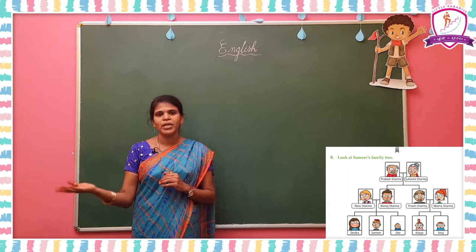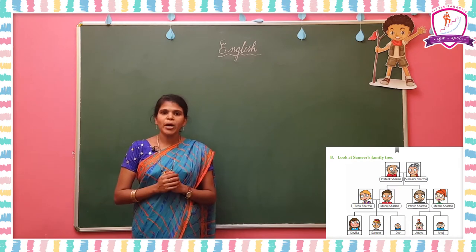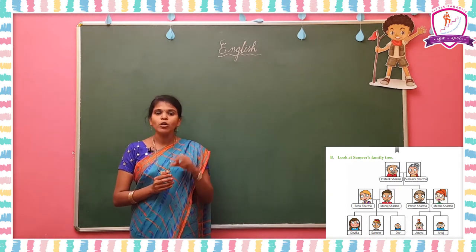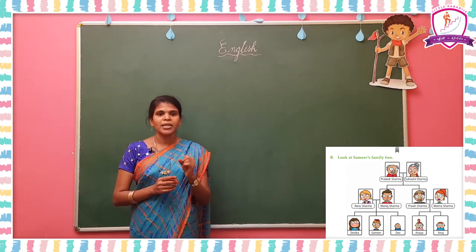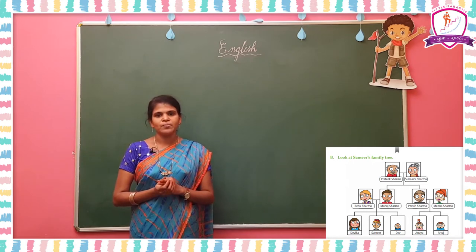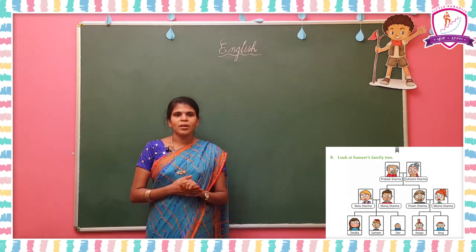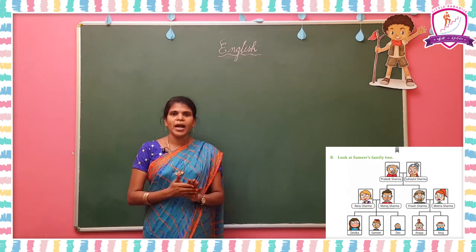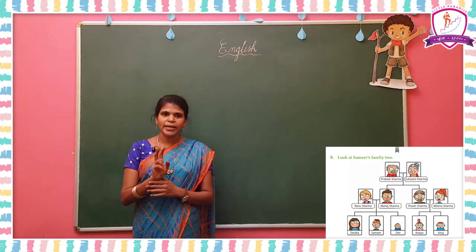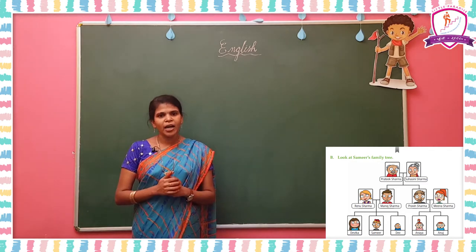Praveen Sharma's wife is Meena Sharma. Mano Sharma and Renu Sharma have three children: Samir and Dev. Praveen Sharma and Meena Sharma have two children: Anya and Anu.